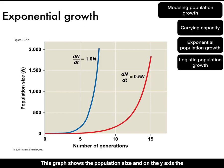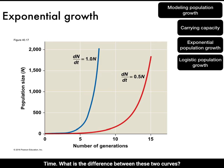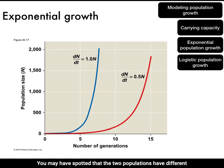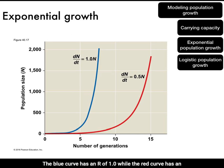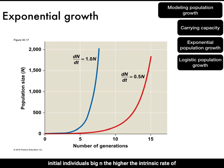This graph shows population size N on the y-axis and the number of generations on the x-axis. The curves plot population growth through time. The two populations have different intrinsic rates of increase: the blue curve has an r of 1.0, while the red curve has an r of 0.5. Both appear to have started with the same number of initial individuals. The higher the intrinsic rate of increase r, the faster the population grows.